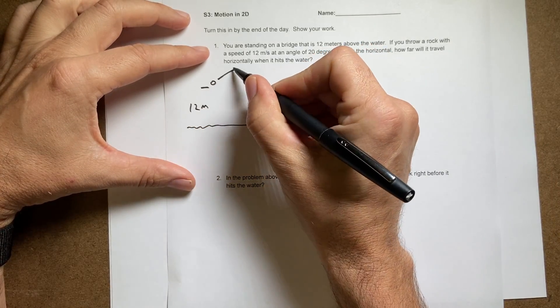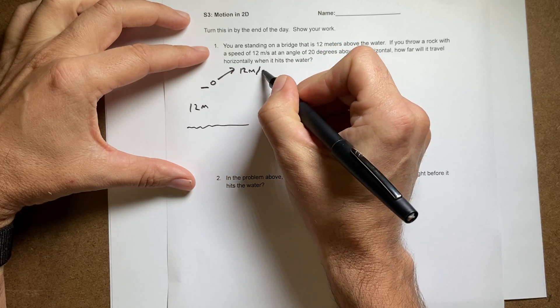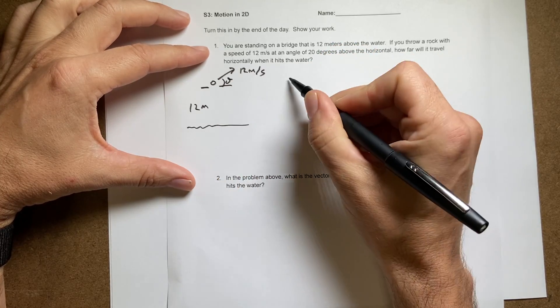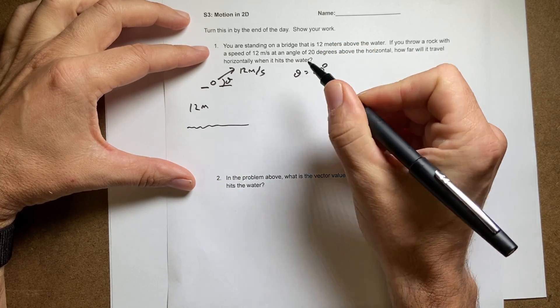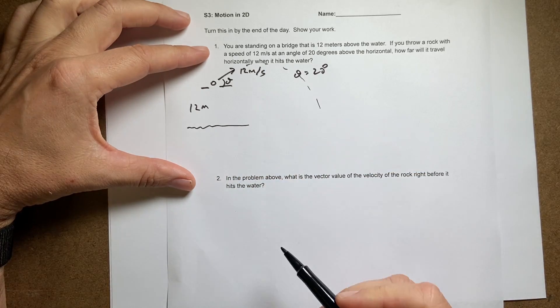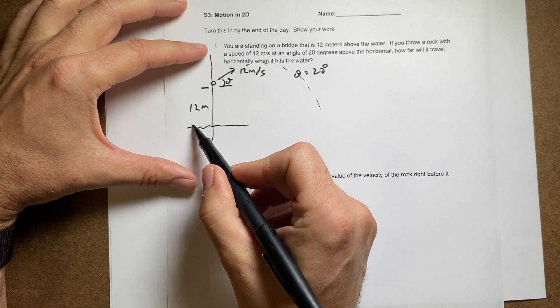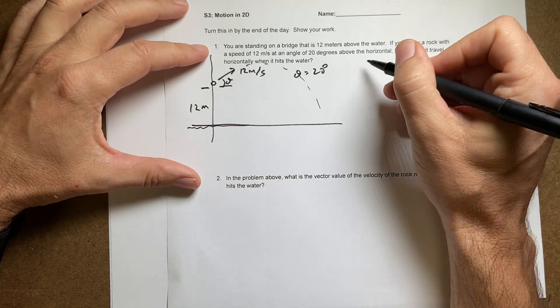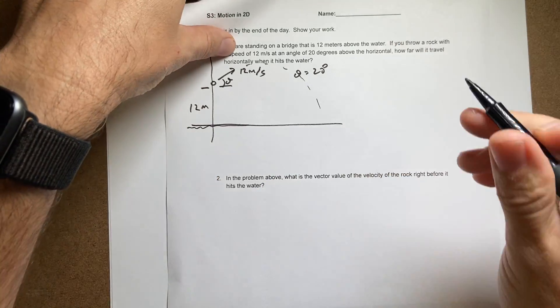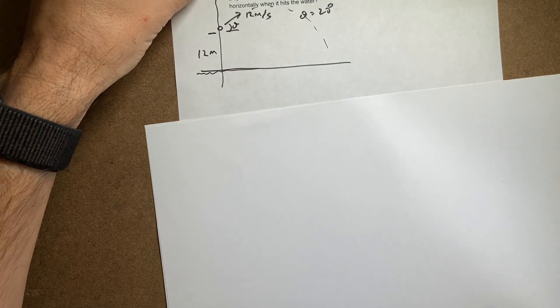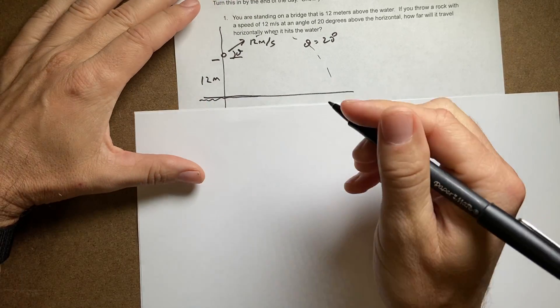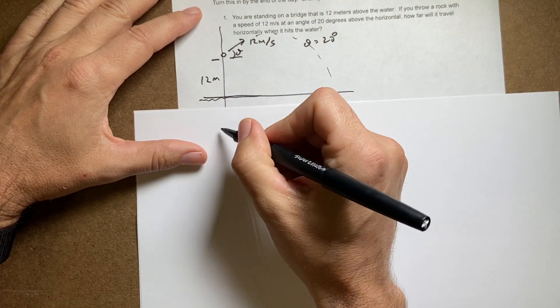I throw a rock with a speed of 12 meters per second at an angle of 20 degrees. How far will it travel horizontally? Let's go ahead and start right here and pick that as my x and y axis. I'm probably going to have to do this on a new piece of paper.